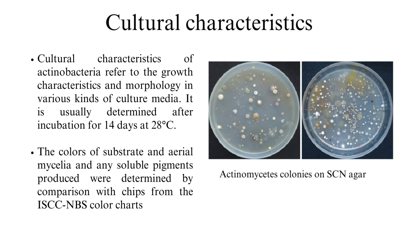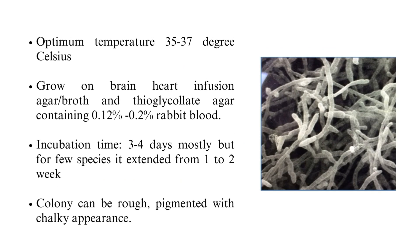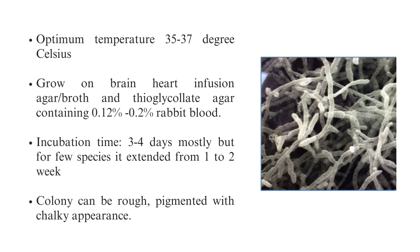Cultural characteristics of actinobacteria refer to growth characteristics and morphology in various culture media. It is usually determined after incubation for 14 days at 28°C. Colors of substrate and aerial mycelia and any soluble pigments produced are determined by comparison with chips from the ISCC-NBS color charts. Optimum temperature is 35 to 37°C. They grow on brain heart infusion agar or broth and thioglycolate agar containing 0.12 to 0.2% rabbit blood. Incubation time is three to four days; for some species it extends to one to two weeks. Colony can be rough, pigmented, with a chalky appearance.